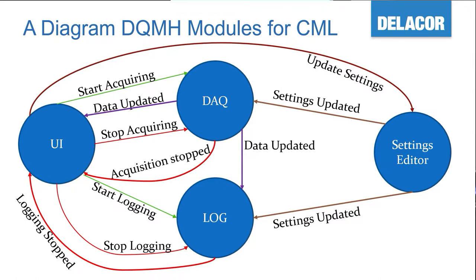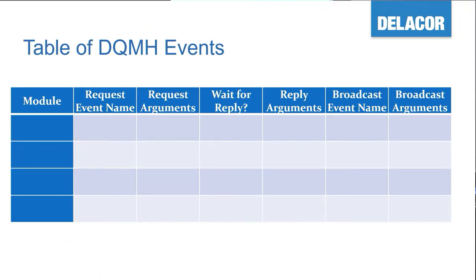This next tip has helped a lot of people just getting started. It's a simple table where you put your module name, the name of your request, the request arguments, whether you need a wait-for-reply, whether it's asynchronous or synchronous, the reply arguments, and any broadcast associated with that request.